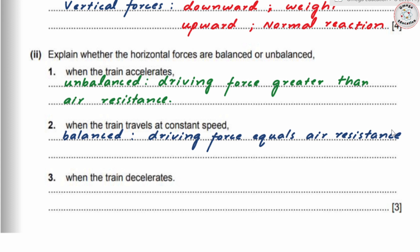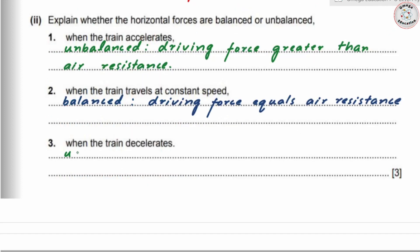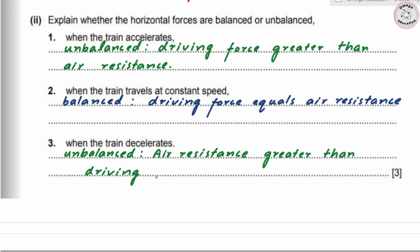When the train decelerates, the forces are again unbalanced. In this case, air resistance or frictional force is greater than the driving force.